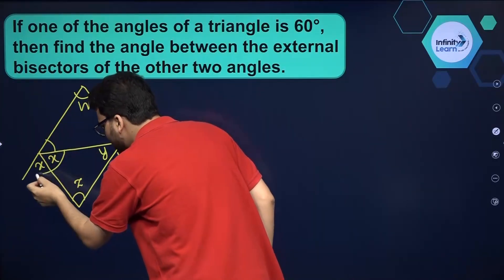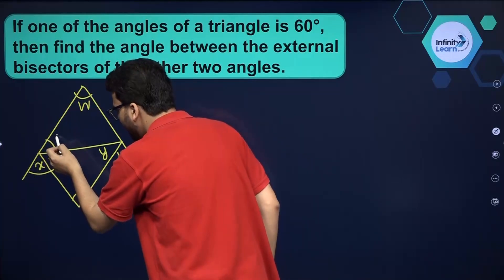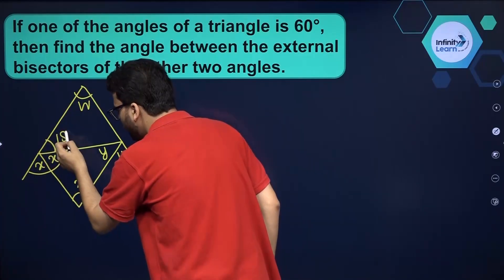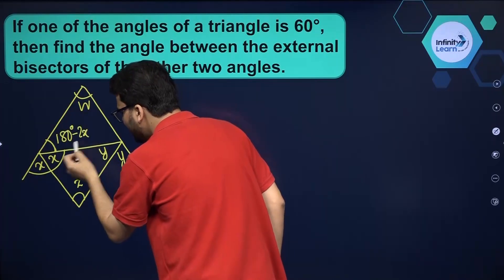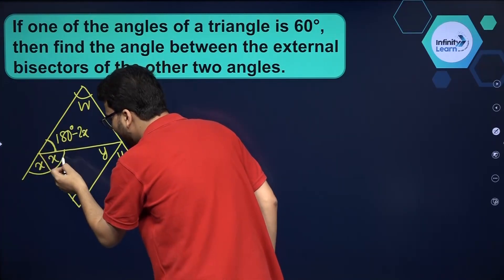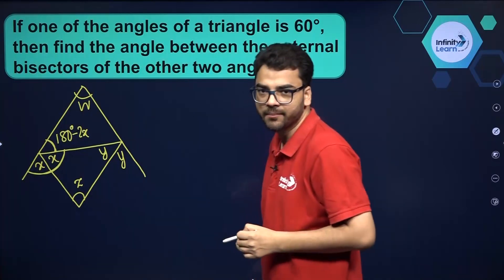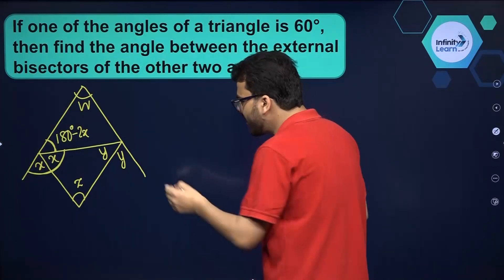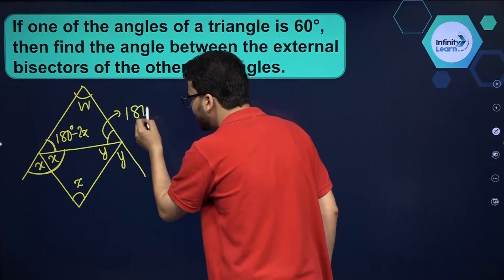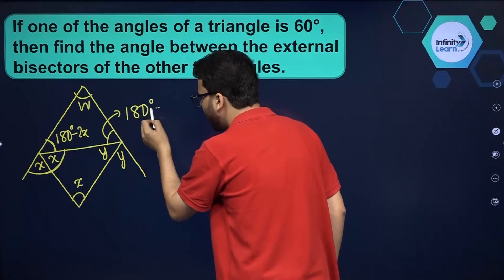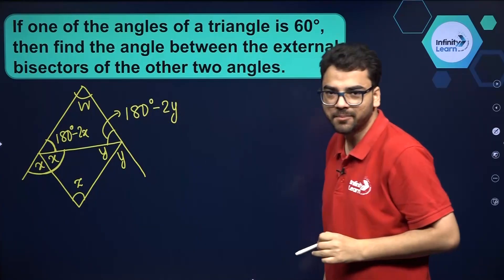Now, this total angle is 2x. So can I not say that the external angle on this side will be equal to 180 minus 2x? The reason is that this angle and this angle are forming a linear pair. In the same manner, the external angle on the other side will be equal to 180 degrees minus 2y.